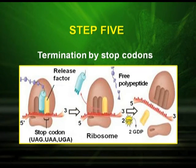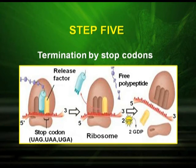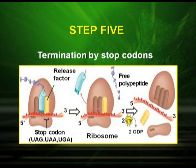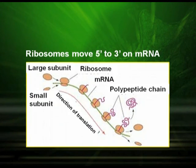Step five, the last step, is termination. The termination process takes place via stop codons: UAG, UAA, and UGA. Termination takes place with the help of release factors. During termination, the polypeptide is released, the tRNA is also released, and the small and large subunits of the ribosome dissociate, using energy from GTP. The ribosomes move from 5 prime to 3 prime on messenger RNA, as the diagram clearly shows, and the polypeptide chain is released.